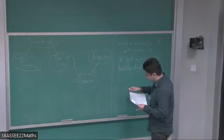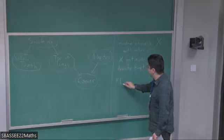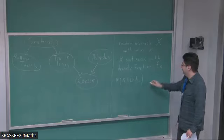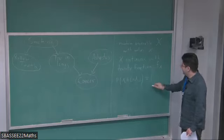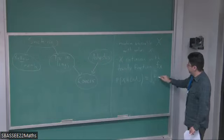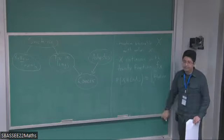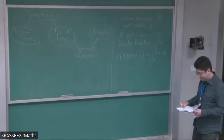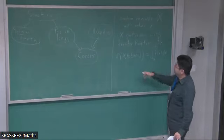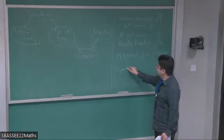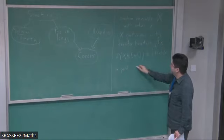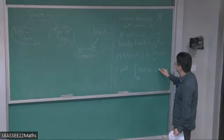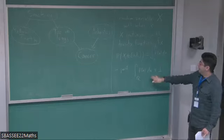The probability that X is in some interval [a,b] can be computed by integrating from a to b this density function. For a real-valued variable, the integral over all of ℝ — from minus infinity to infinity — of this function has to be one. So this is a non-negative function that integrates to one.